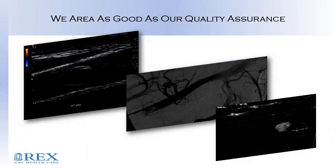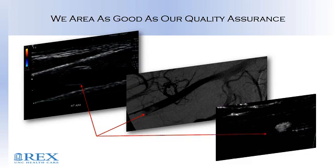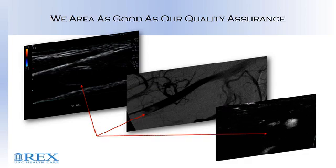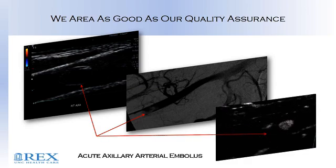This patient came to our ER with no pulses in the right arm. If we look at the first and second image, this is acute arterial embolus. Our third image is secondary imaging with SMI, and you can see the delineation around the thrombus.